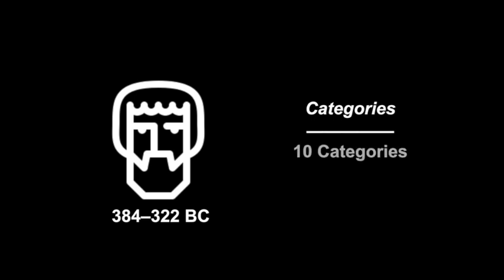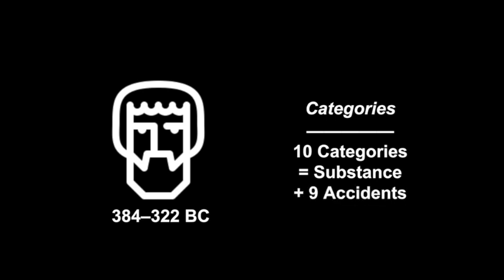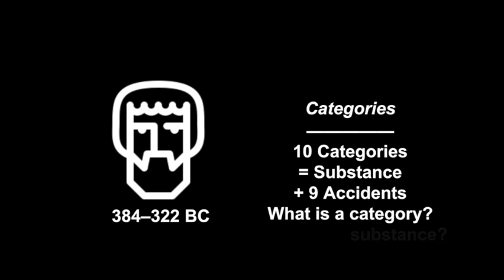There are 10 categories that we're going to talk about. The first is substance, which we will actually cover last, and then nine accidents. What is a category? What is a substance? What are accidents? Let's start with the basics.